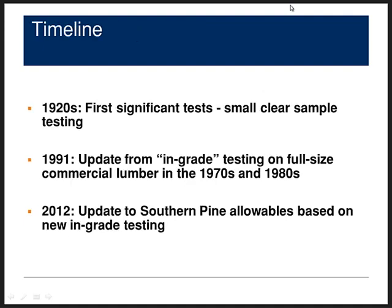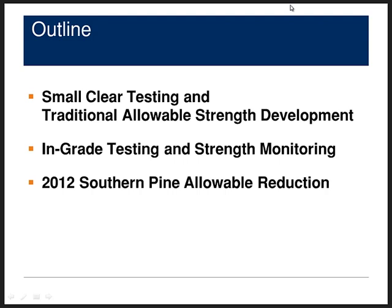These learning objectives are going to be attained by considering how design values have changed over time. We're going to be looking at a period of about 90 years of testing, carrying you through those changes from small clear sample testing done in the 1920s through the in-grade testing done in the 70s and 80s leading up to the 1991 code change, and then finally the 2012 update to the southern pine allowables. The outline for today covers: first, small clear testing and traditional allowable strength development; second, in-grade testing and strength monitoring; and finally, the southern pine allowable strength reduction.